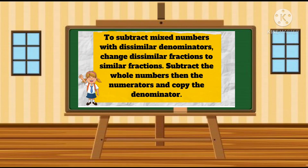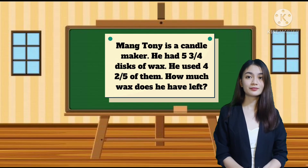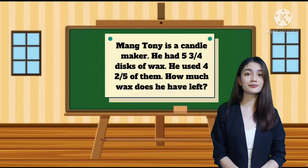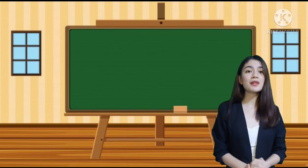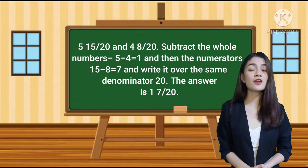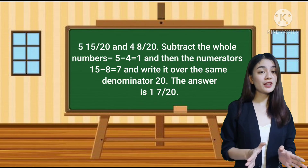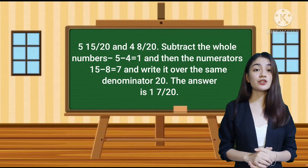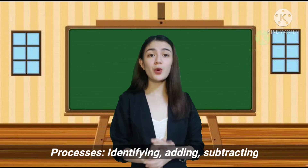To subtract mixed numbers with dissimilar denominators, change the dissimilar fractions to similar fractions, subtract the whole numbers and the numerators, and copy the denominator. What is asked? What are given? The LCD of 4 and 5 is 20. We derive similar fractions: 5 and 15 over 20 and 4 and 8 over 20. We subtract the whole numbers: 5 minus 4 equals 1, then the numerators: 15 minus 8 equals 7, written over the denominator 20. The answer is 1 and 7 over 20.